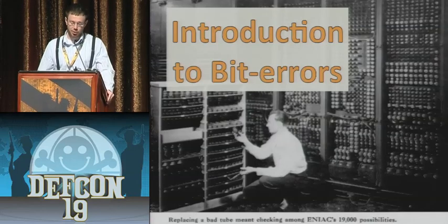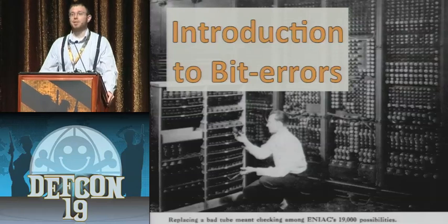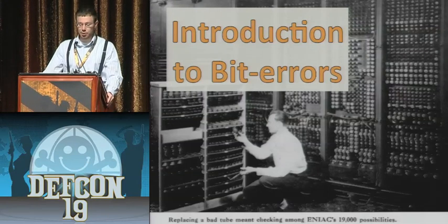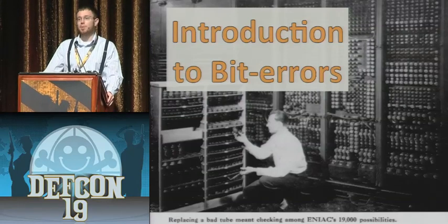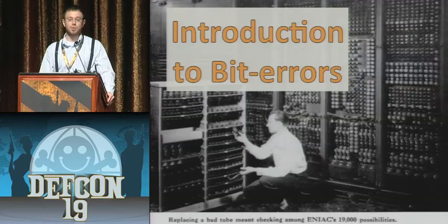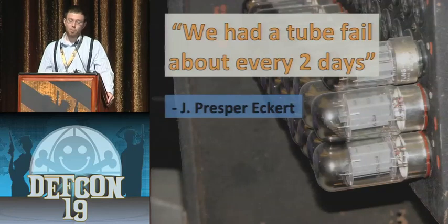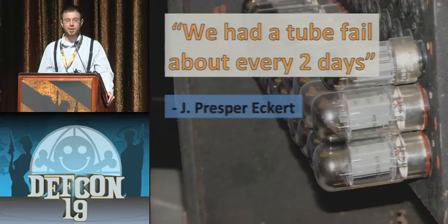Now that we've talked about bit errors, let's go through a bit of history. The man in this image is actually working on the ENIAC — he's replacing a vacuum tube. The ENIAC was made before modern transistor technology and used vacuum tubes for memory storage and computation. These vacuum tubes failed, and they failed a lot. Whenever one would fail, the machine would either give incorrect answers or stop working entirely. These were the first examples of bit errors, and they've been with us for a very long time.